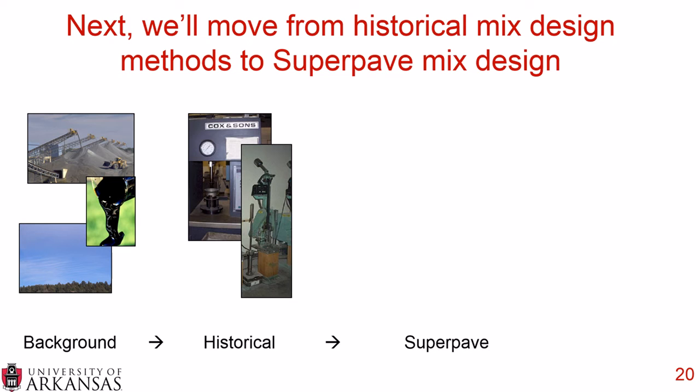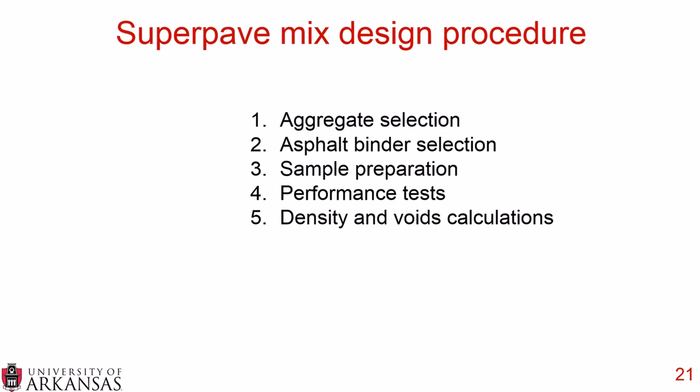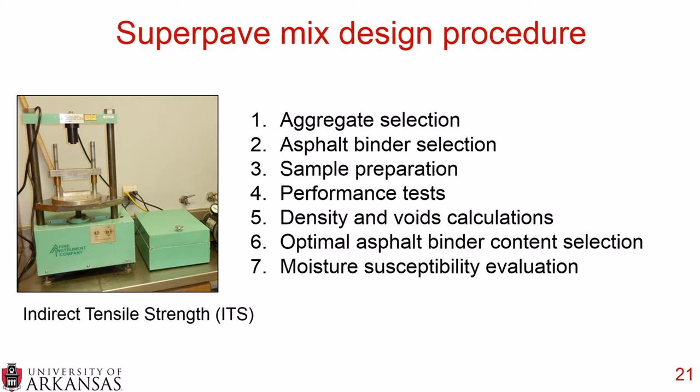Moving from historical mix design methods to the Superpave mix design method, the Superpave procedure starts with your aggregate selection, then you choose your asphalt binder, prepare your samples, run your performance tests, run your density and air voids calculations, find your optimal asphalt binder content, and finally a seventh step — run and evaluate your moisture susceptibility using the Indirect Tensile Strength Test, or ITS.